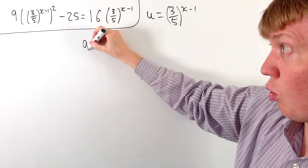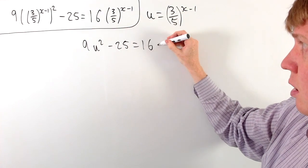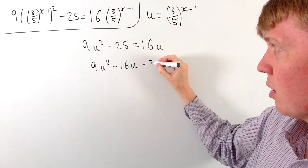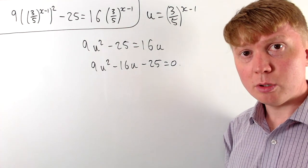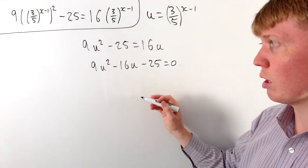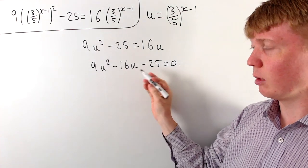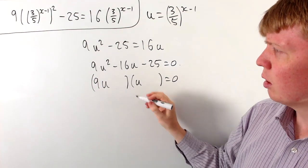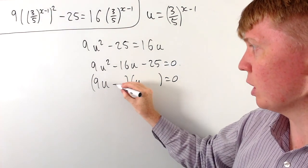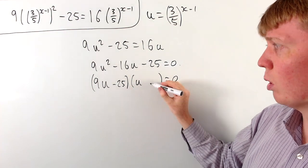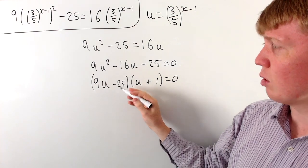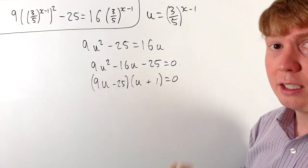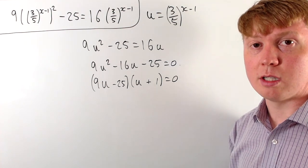This transforms our equation into 9u squared minus 25 equals 16u. Taking the 16u onto the left-hand side, we get 9u squared minus 16u minus 25 equals 0. There is a nice integer factorization: 25 is 9 plus 16, so we can factor as 9u plus 9 times u minus 25 divided into (9u plus something)(u + something). We try two numbers multiplying to negative 25: putting in negative 25 and positive 1, giving minus 25u plus 9u equals minus 16u, and negative 25 times positive 1 gives our negative 25 term. Alternatively, use the quadratic formula.